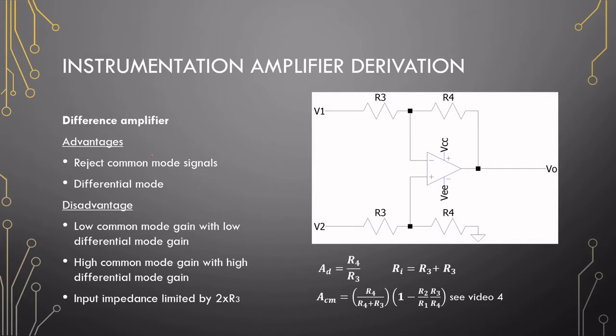So we need some sort of gain stage to help out. Lastly, the input impedance of this amplifier is just two times R3 — the input resistance is determined by those two resistors. Ideally, we want a low common mode gain, a high differential mode gain, and an infinite input impedance.